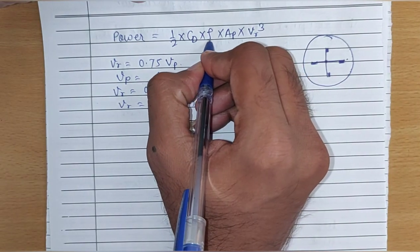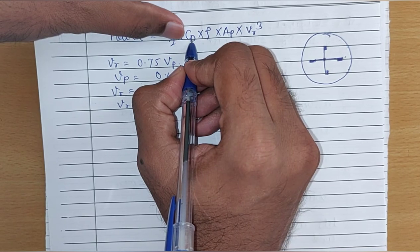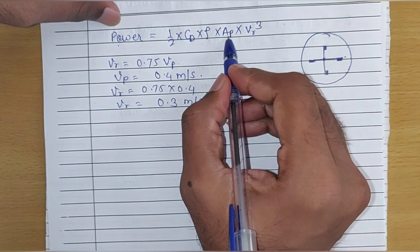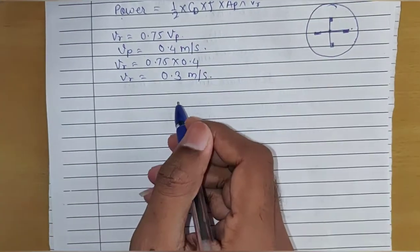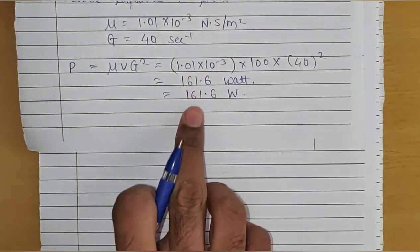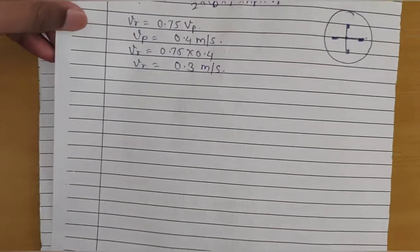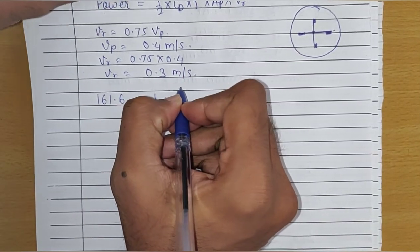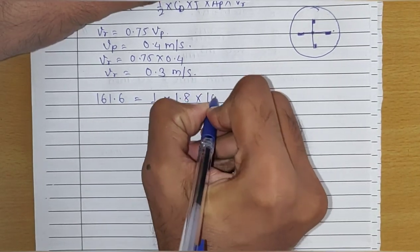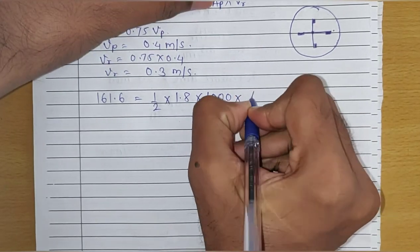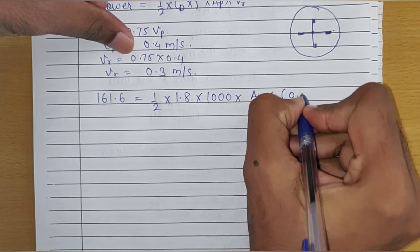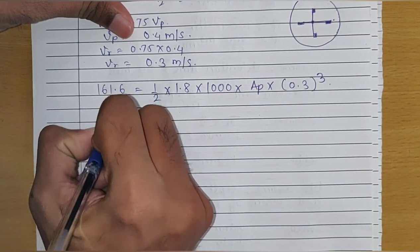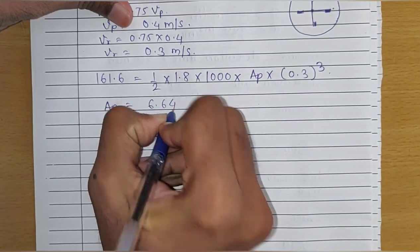We know the density of water is 1000 and the drag coefficient CD is between 0.8 to 1.9. We take CD as 1.8. Setting up the equation: 161.6 equals half times 1.8 times 1000 times area of paddle times 0.3 cubed. The only unknown is the area of paddle, and solving gives the area of paddle as 6.64 meter square.